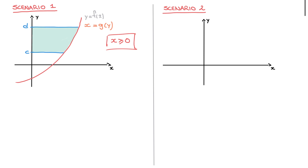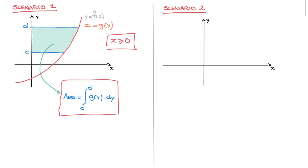When dealing with a situation like this one, this enclosed area is given by the following: area equals to the definite integral from c to d of g of y, and since we're integrating with respect to y, we write dy. So provided the points along the portion of the curve that encloses the area have x-coordinates greater than or equal to 0, we can simply use this formula.